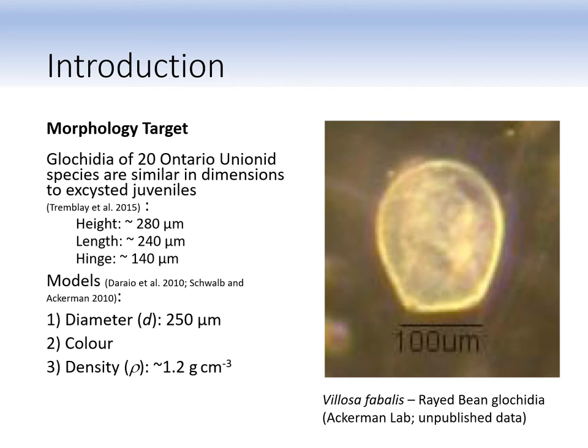Before making a physical model of juvenile unionids, we had to identify their physical characteristics we intend to replicate. We aimed to make alginate microspheres according to published data on their physical characteristics. Glochidia have similar dimensions to recently excysted juveniles and are approximately 280 microns high, 240 microns long, and their hinge is approximately 140 microns wide. The parameters we settled upon for our particle morphology target were 250 micron spheres, colored to enhance visibility, and with a density of 1.2 grams per centimeter cubed. On the right is an example of a rayed bean glochidia.